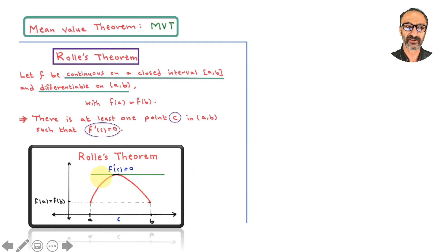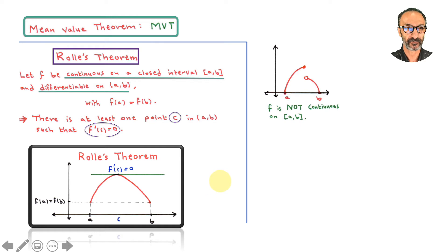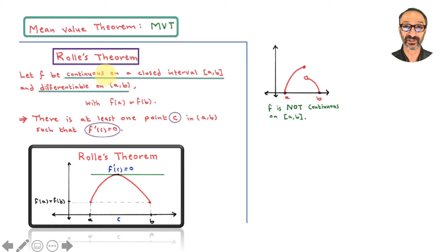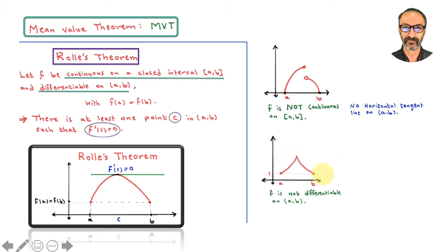Now, when this doesn't work, here are some cases. Rolle's theorem requires continuity and differentiability. In this first case, the function is not continuous, so we can't use Rolle's theorem — it doesn't guarantee a horizontal tangent. In this case, there is no horizontal tangent line on AB. Here's another case: a sharp edge. We can't have a horizontal tangent at a sharp edge — F is not differentiable, so there is no horizontal tangent line on AB.